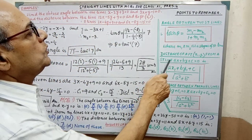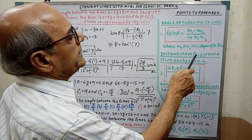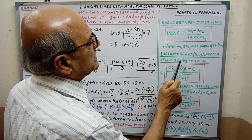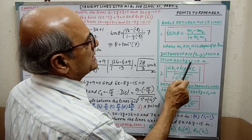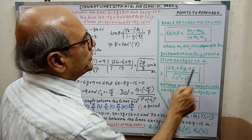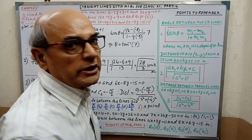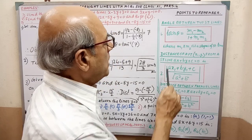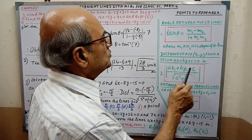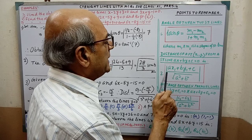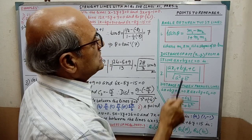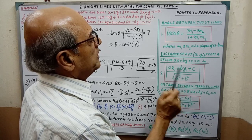Next, Part 2: Distance of a point (x1, y1) from a straight line ax + by + c = 0. The distance is always positive, so we use the modulus value: |ax1 + by1 + c| / √(a² + b²). This formula you have to remember.